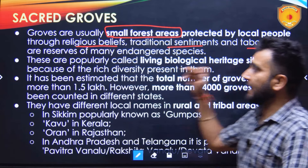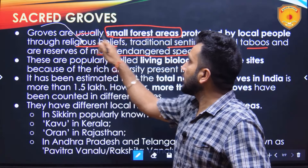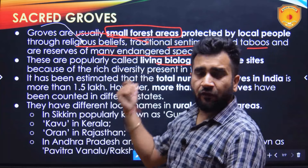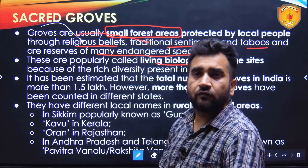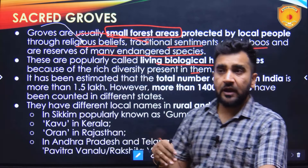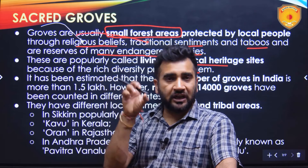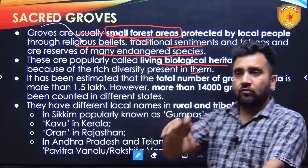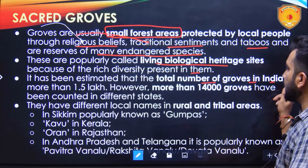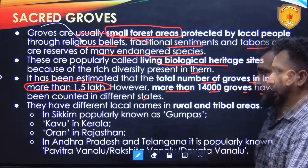Sacred groves are small forest areas protected by local people, generally through religious beliefs, traditional sentiments, and taboos. They are a reserve of many endangered species, which is why the word 'sacred' is given to them. These are popularly called living biological heritage sites because of the rich diversity present in them. When these small forests are maintained, not only are the trees and shrubs preserved, but also soil health improves, microbes and macro organisms thrive, and the entire biodiversity of the region develops, enabling better water retention and reducing water scarcity.